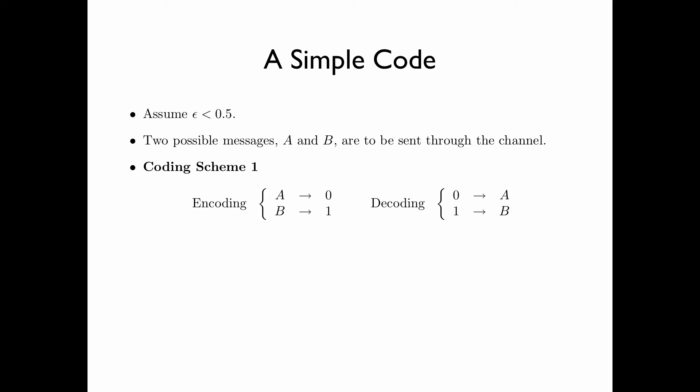For decoding, if the received symbol is equal to 0, then we decode it to the message A. And if the symbol received is equal to 1, then we decode it to the message B. A decoding error occurs if and only if a crossover occurs. For example, if the message is A and we transmit a 0 and the received symbol is 1 — that is, a crossover occurs — then we would decode incorrectly. Therefore, the probability of error is exactly equal to epsilon, the crossover probability.